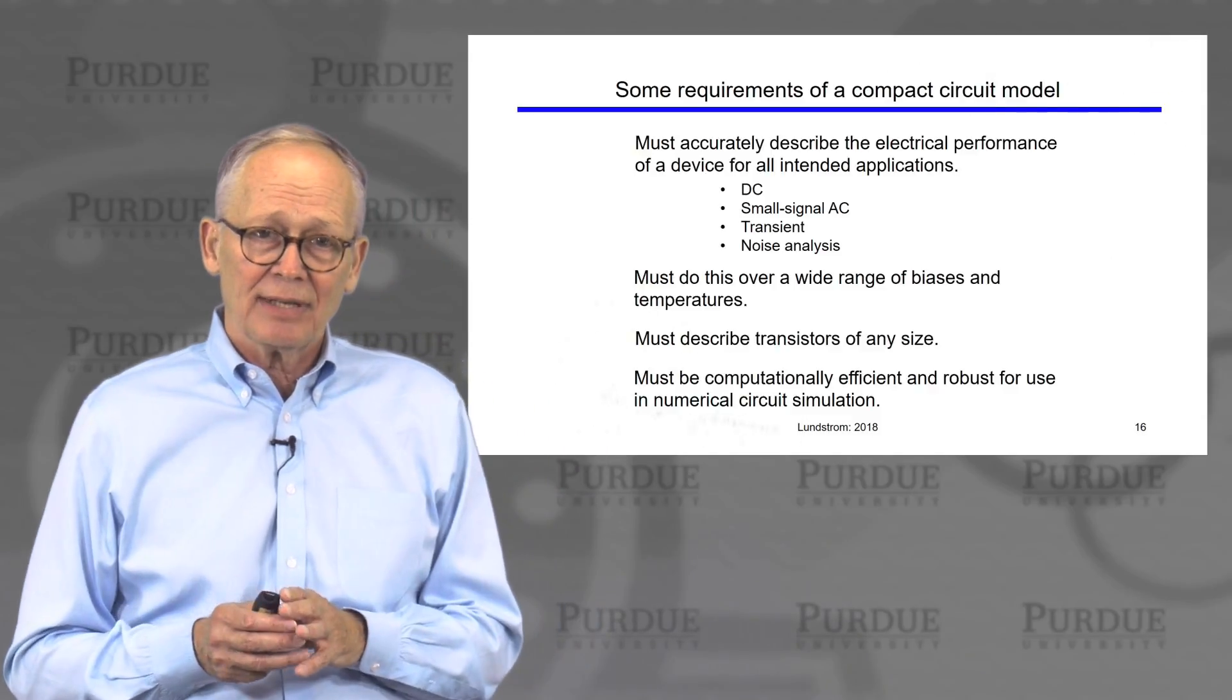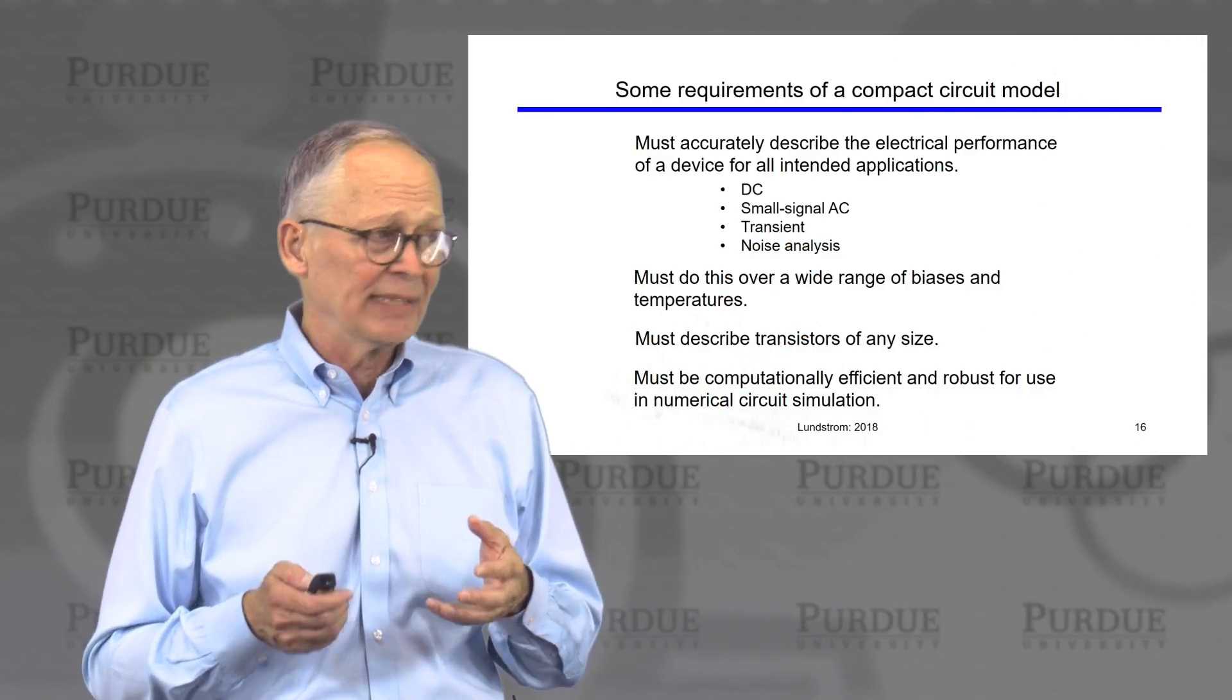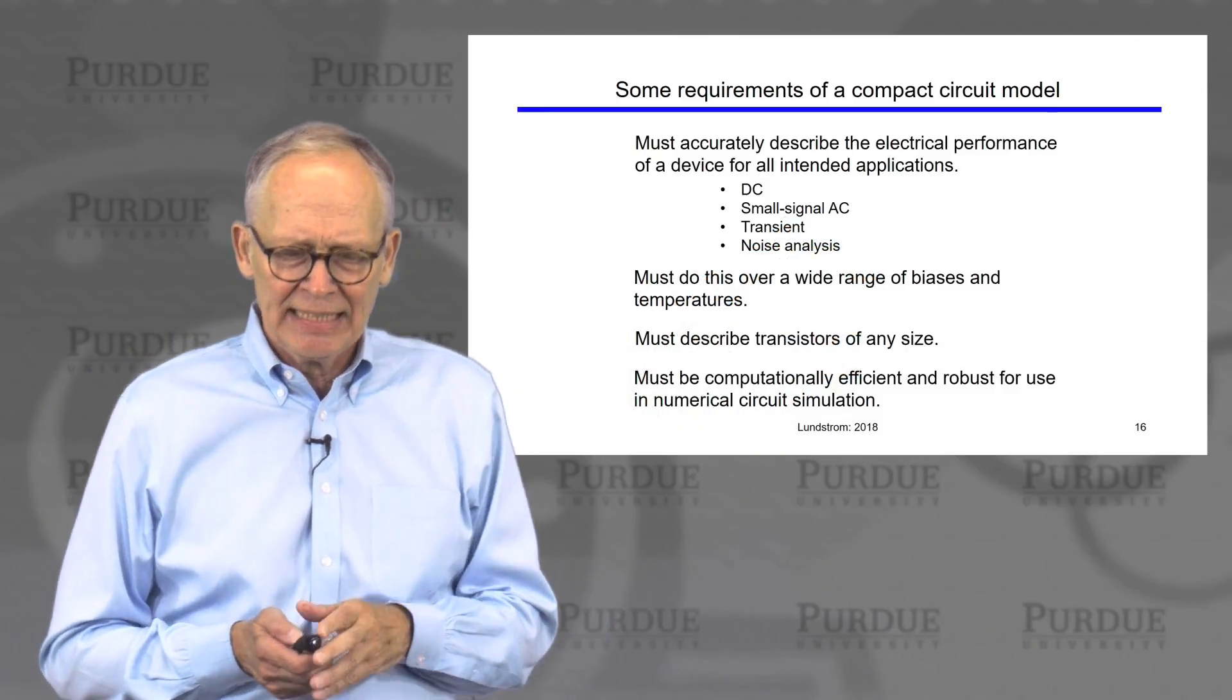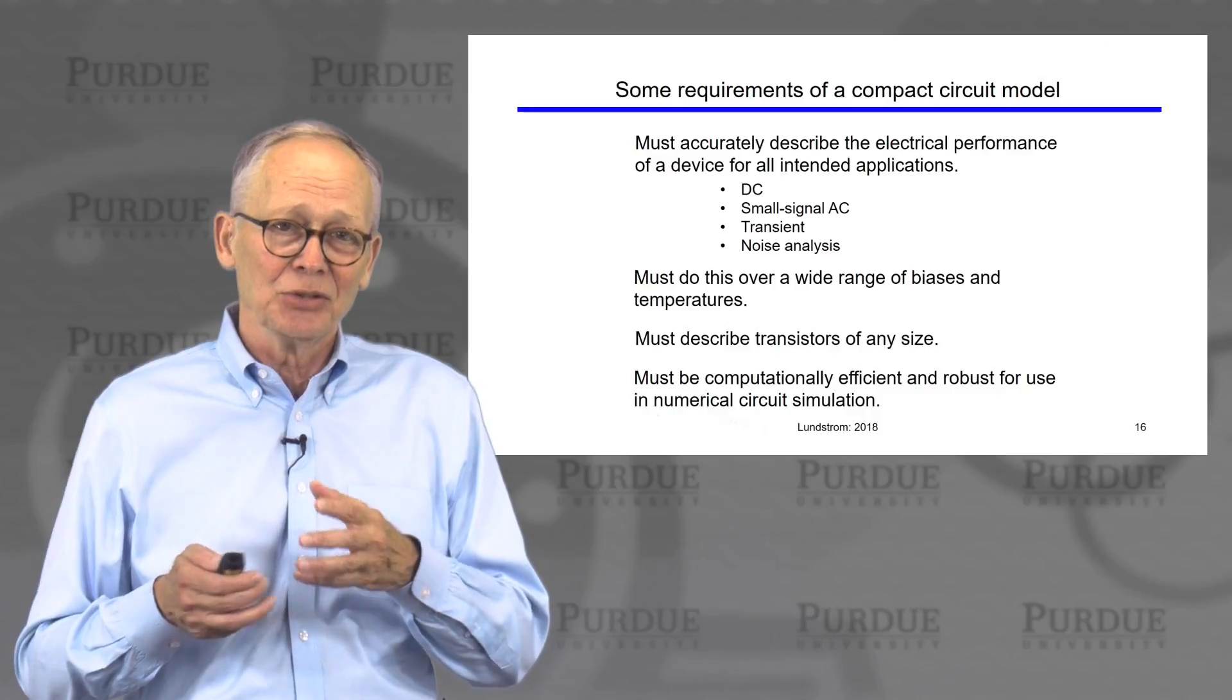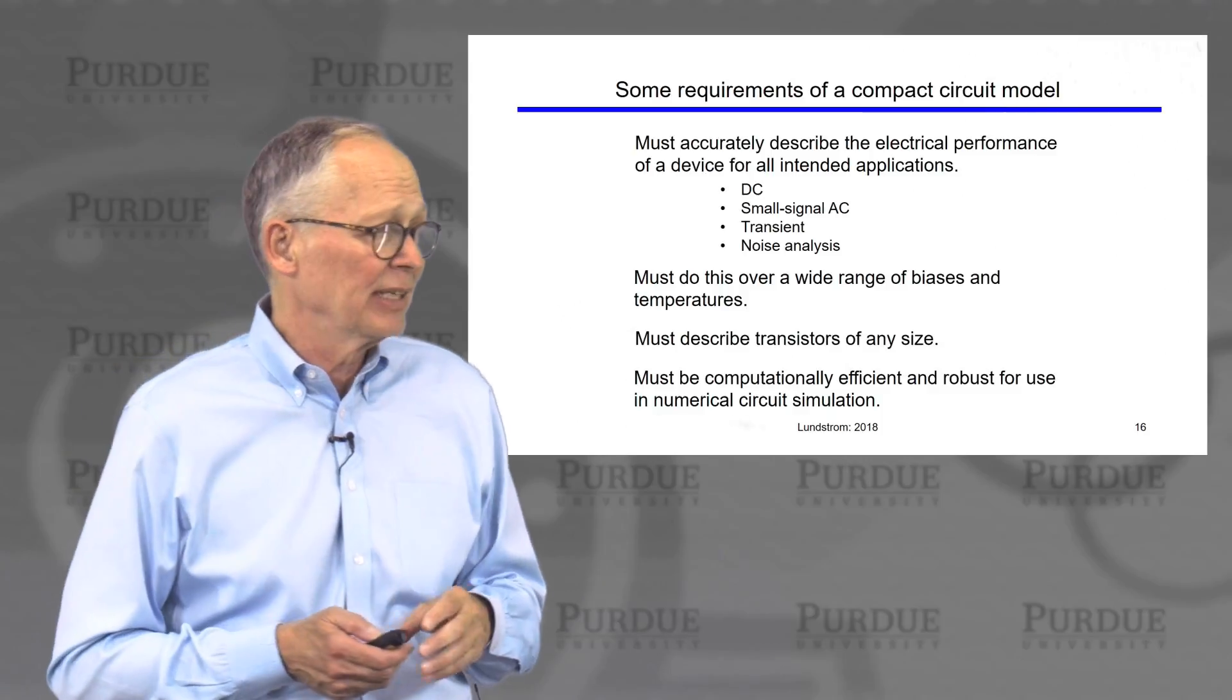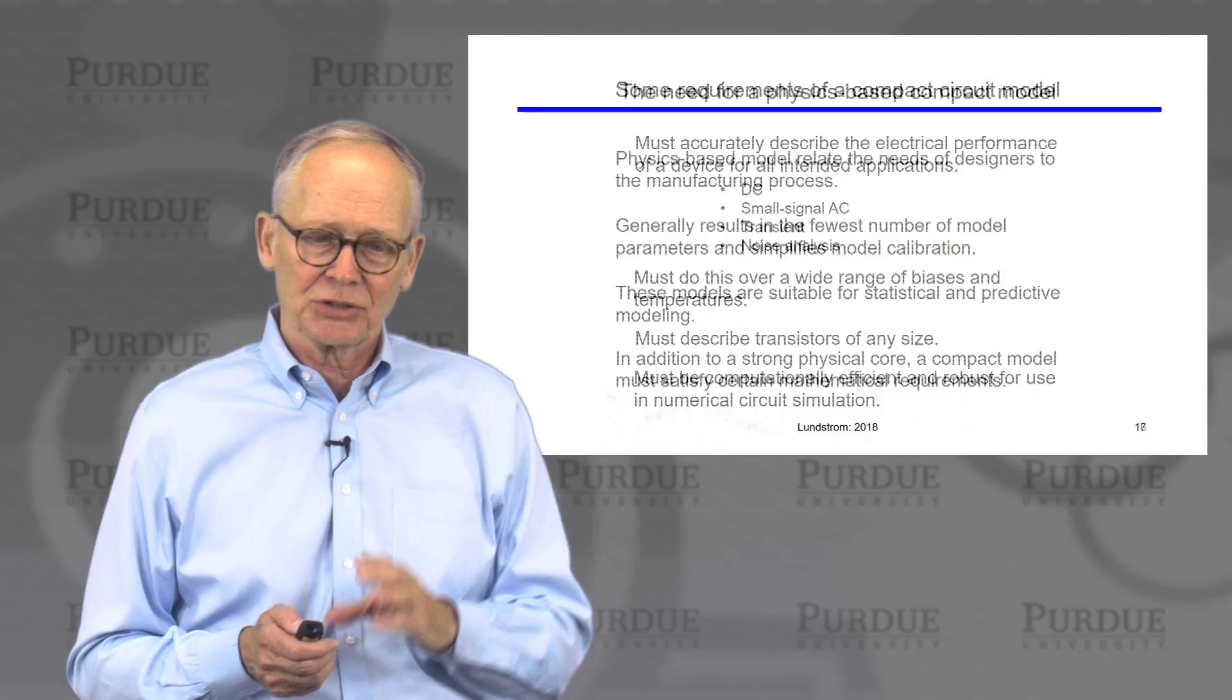Some of the requirements of a compact model for circuit analysis are that we must accurately describe the performance of the device not just under DC conditions, but under AC small signal conditions, transient conditions. We must include noise analysis and lots of factors that are important in real circuits. We must do this over a wide range of bias and temperatures, over the range that the designer might be interested in, but over an even wider range because the Newton iteration process might encounter those biases while homing in on the solution. We must describe a transistor of any size because designers use different size transistors. And it must be computationally efficient and robust so that it can be used efficiently in numerical circuit simulation programs.